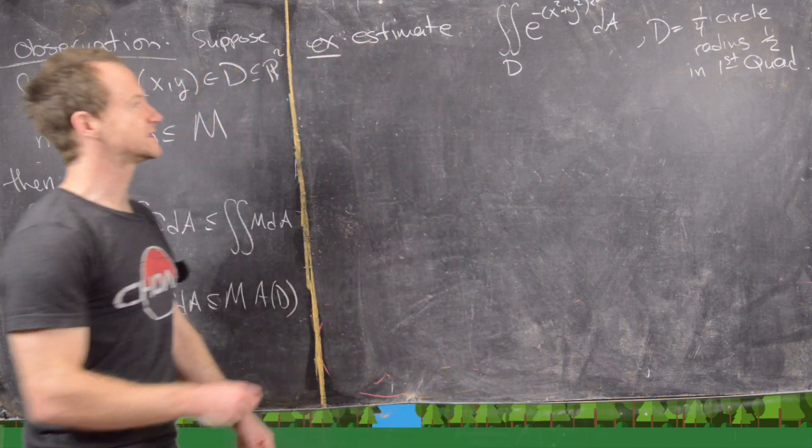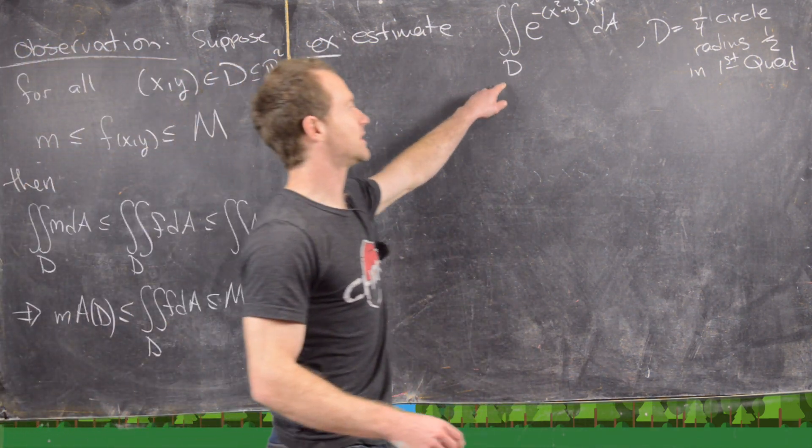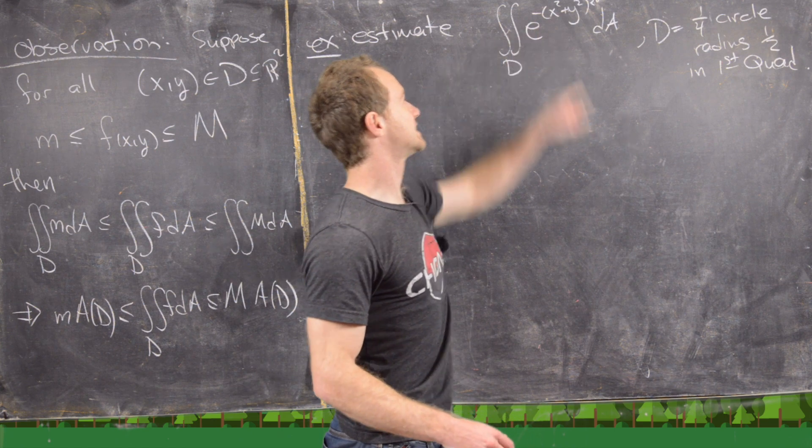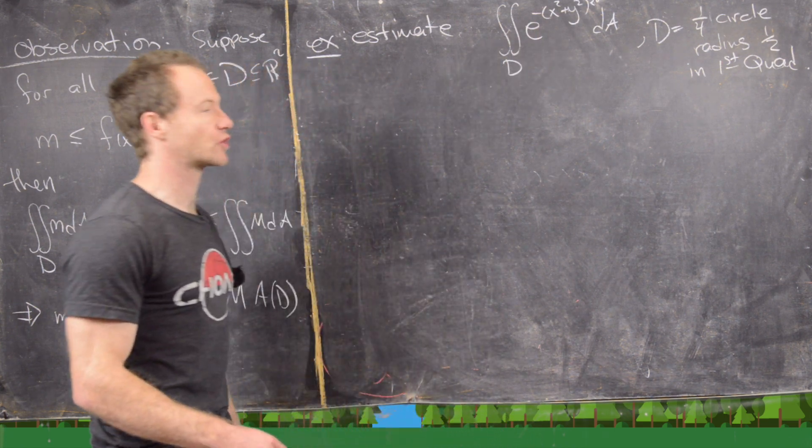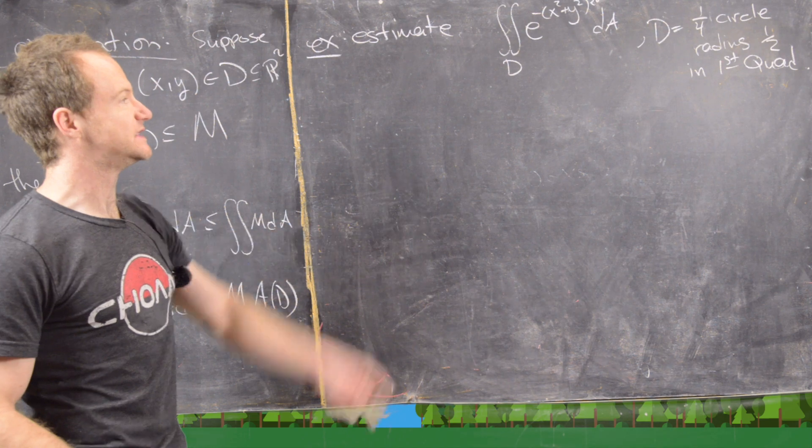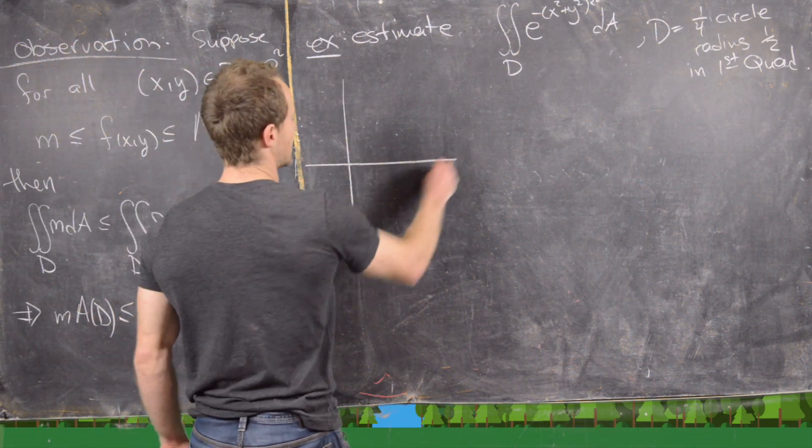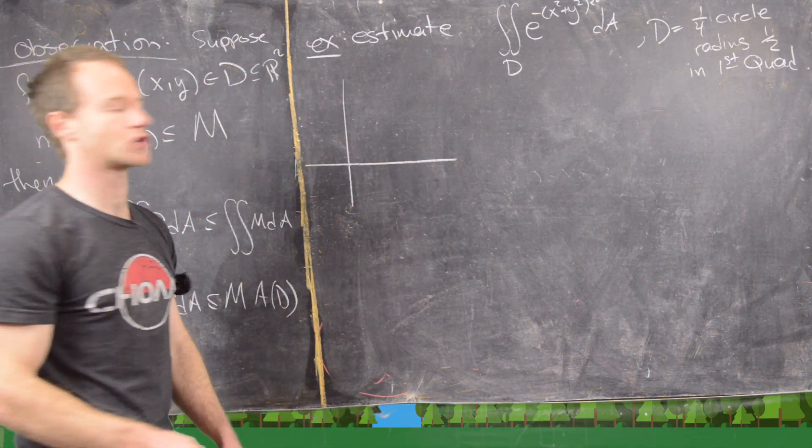All right. So let's go ahead and look at this example. We want to estimate the double integral over D of e^(-(x²+y²)²) dA. And so D is going to be a quarter circle of radius one-half in the first quadrant.